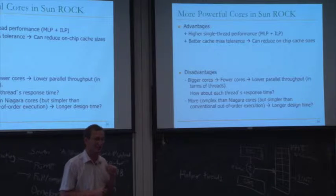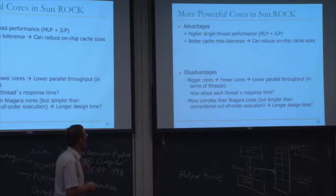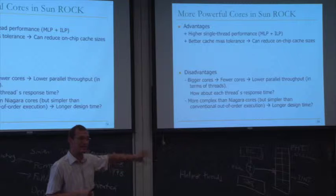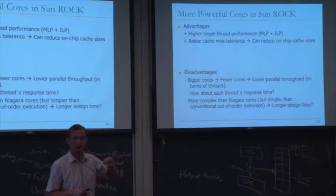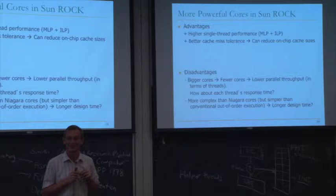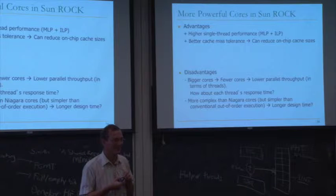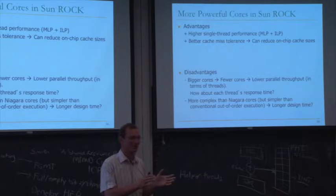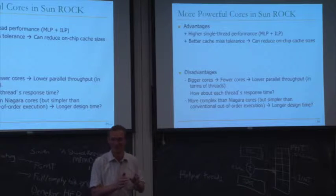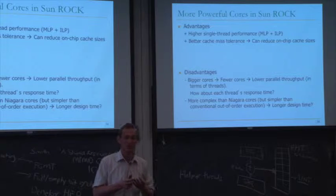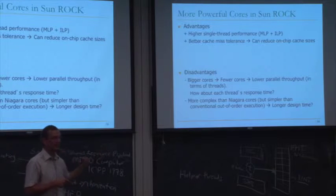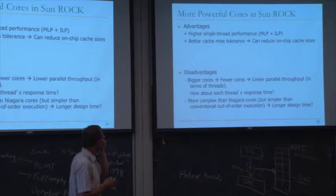Sun Rock also added hardware transactional memory support — making it the first processor to have transactional memory. This was one of the two major new features in Rock (the other being run-ahead-based speculative threading). Sun's evolution: started with very wimpy cores, and by the end (before Oracle acquisition) had moved to much more powerful cores — better than out-of-order execution according to their results.